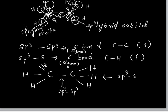In ethane, sp3 hybridization takes place in carbon. The C-C bond forms by sp3–sp3 hybrid orbital overlapping, and the C-H bonds form by sp3–s orbital overlapping. There are 3 hydrogens on the left side and 3 on the right side — all forming sigma bonds. So the entire structure of ethane consists of sigma bonds only.